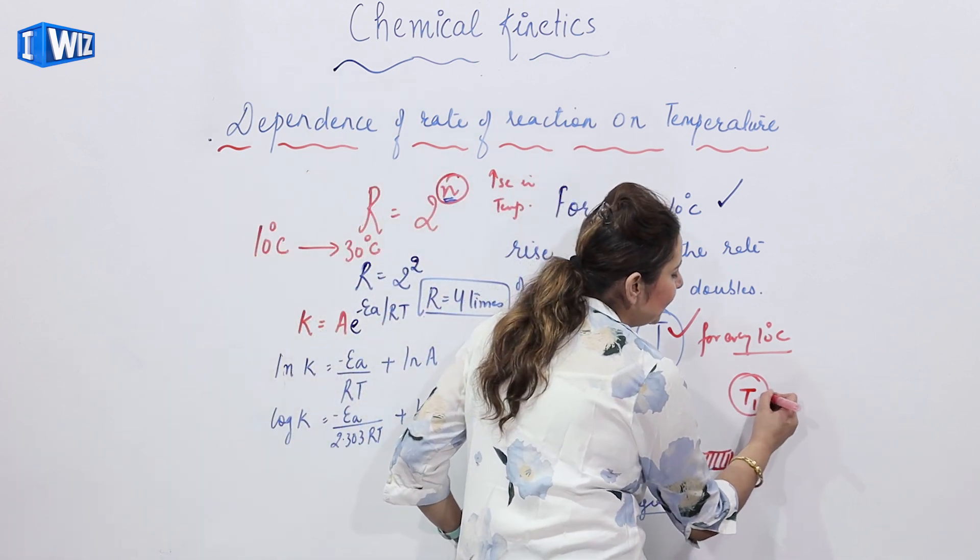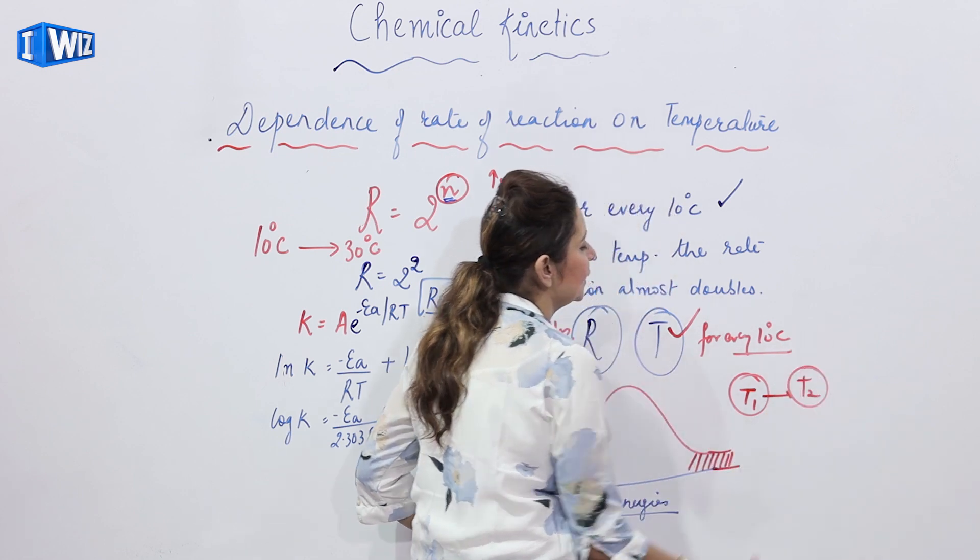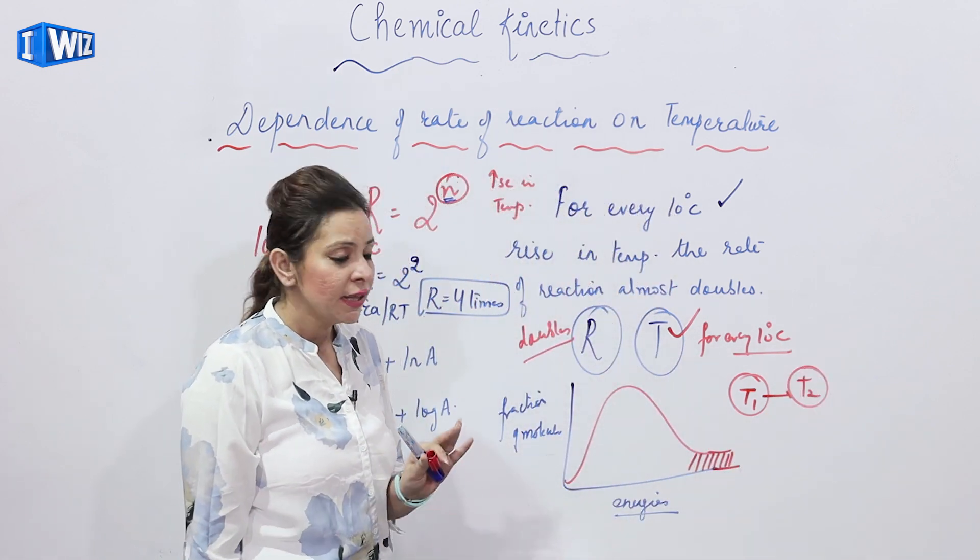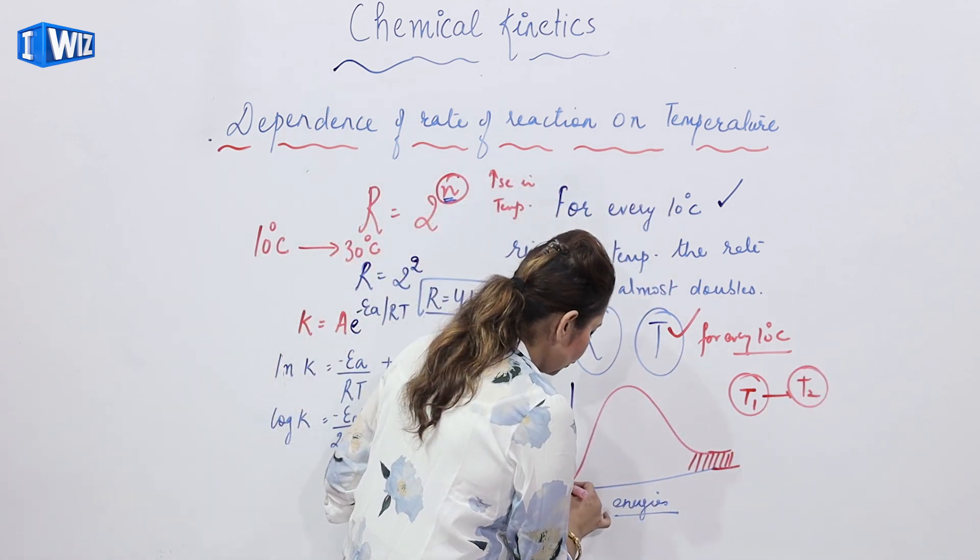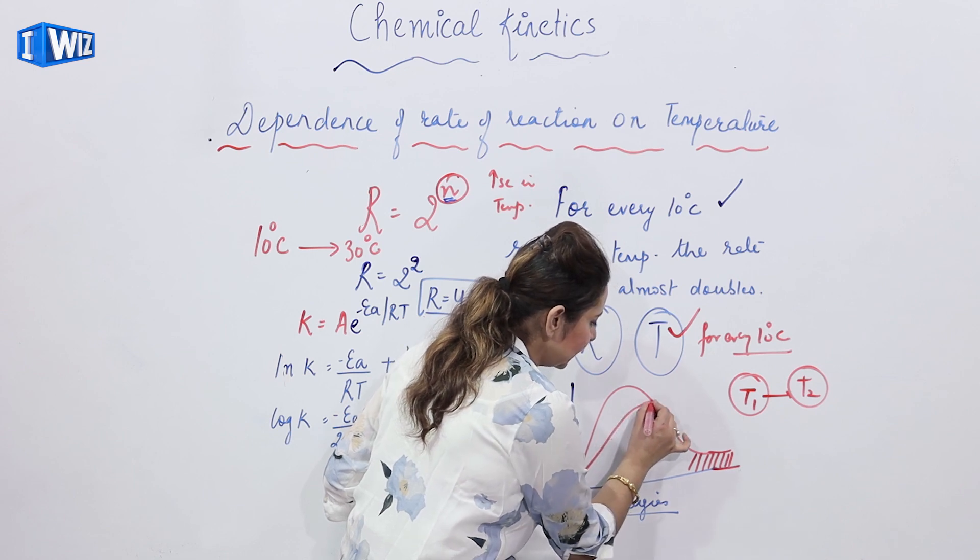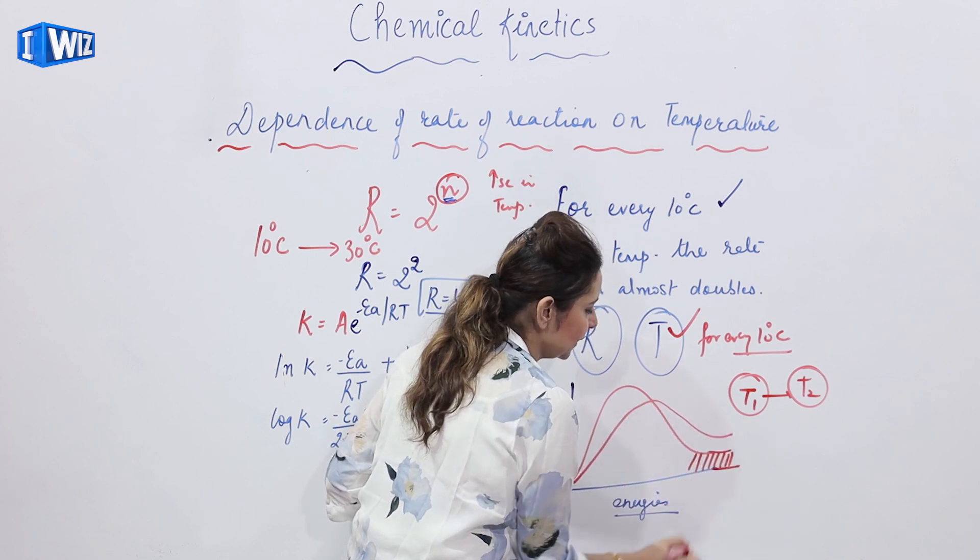But if you increase the temperature, let us say we increase the temperature to T2, then what happens? This slope of the graph bends and it gets extended in this way.